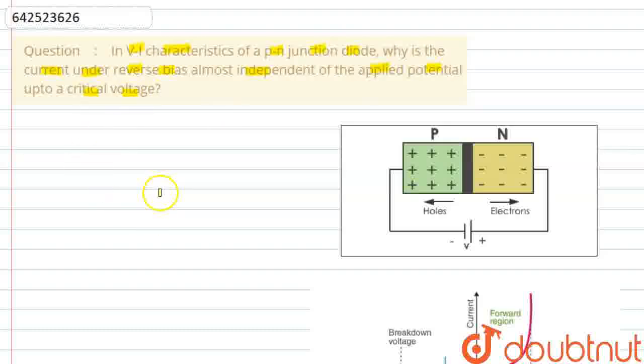Here we need to show why in a PN diode, in the VI characteristics, the current under reverse bias is independent of the applied potential up to a critical voltage.